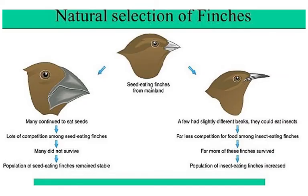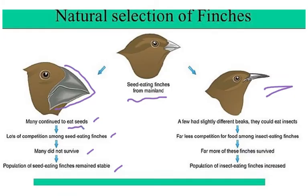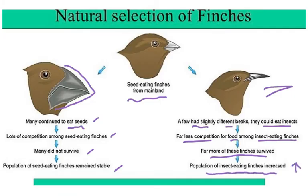Another example of natural selection: the finches. Originally we had seed-eating finches from the mainland. Many continued to eat seeds with lots of competition, and many did not survive — the population of seed-eating finches remained stable. On the other hand, a few had slightly different beaks and could eat insects. There was far less competition for food among insect-eating finches, and far more of these finches survived, so the population of insect-eating finches increased. This is Darwin's natural selection example — his whole journey in the Galapagos Islands was about these finches.